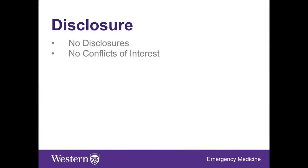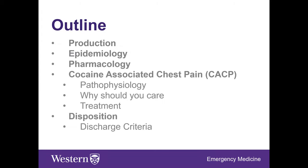I have no disclosures and no conflicts of interest to declare. The overall management of cocaine-related emergencies is fairly straightforward and well covered in the Rosen's chapter. We're not going to cover each individual organ system; we're going to focus specifically on cocaine-related chest pain and MI, cover some epidemiology and pharmacology, and hopefully arrive at some discharge criteria towards the end of the talk.